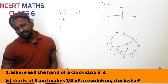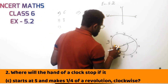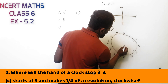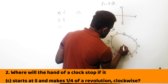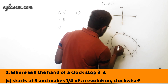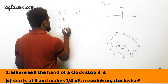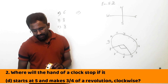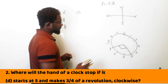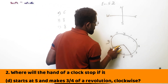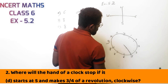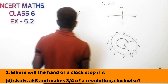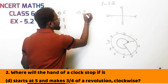C part: starts at 5 and makes half of the revolution. Starting from 5 and making half of the revolution, so it will be at 11. Correction — starting from 5 and making half of the revolution, so it will be at 11. Wait, it will be at 2. The correct answer for starting at 5 and making half a revolution is 11.